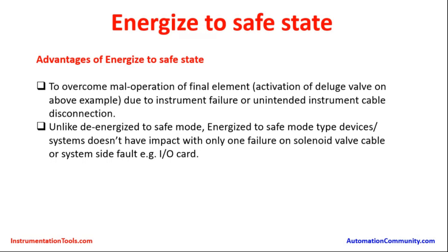In the de-energized state, power is going to the solenoid valve, so whenever there is a cable cut or IO code failure, it leads to the closing of the main valve — which is not the case in Energize to Safe State. As long as power is not flowing through the loop, failure of the module does not have impact. However, there shall be system side fault indications that require the operator and maintenance engineer's attention to attend to the fault and refix the issue or replace the failed module. These are the advantages of Energize to Safe State.